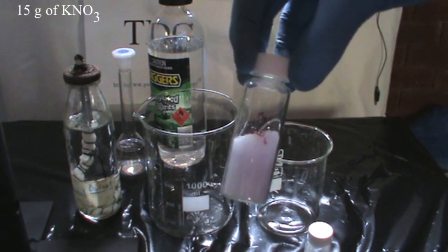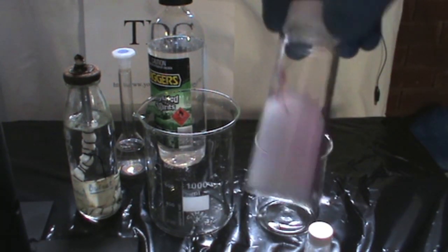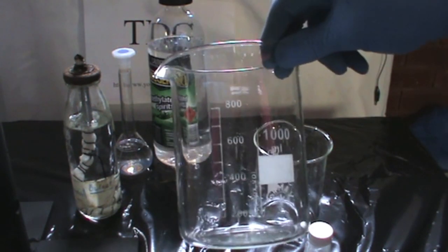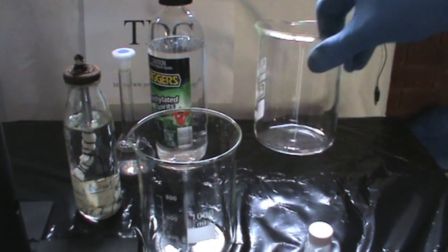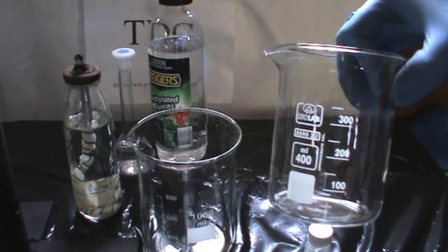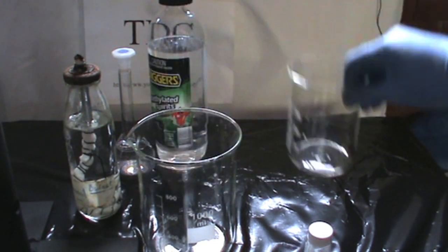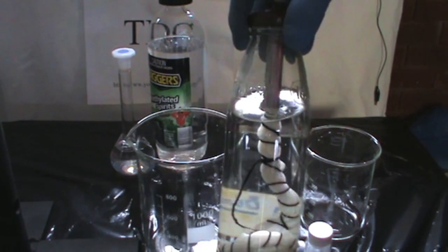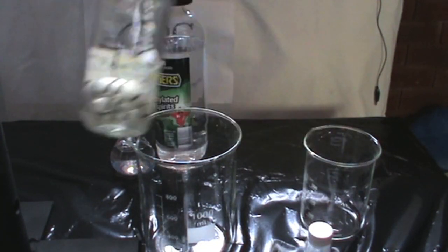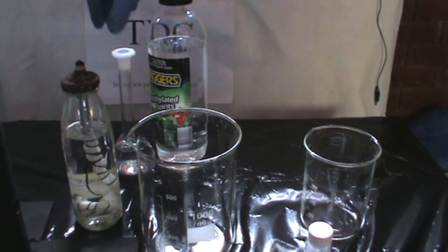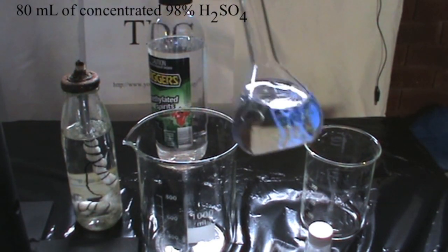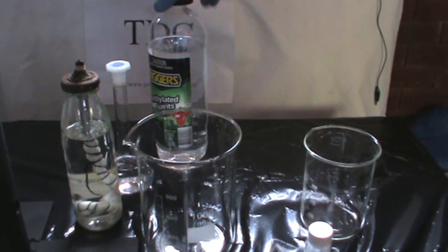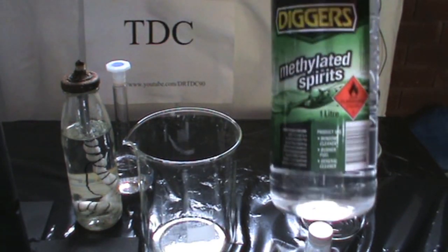Measure out 15g of potassium nitrate. A 1 litre beaker and a 400ml beaker which fits directly inside the larger beaker. An alcohol burner or any other heating source. 80ml of 98% concentrated sulfuric acid solution and a 1 litre bottled solution of methylated spirits.